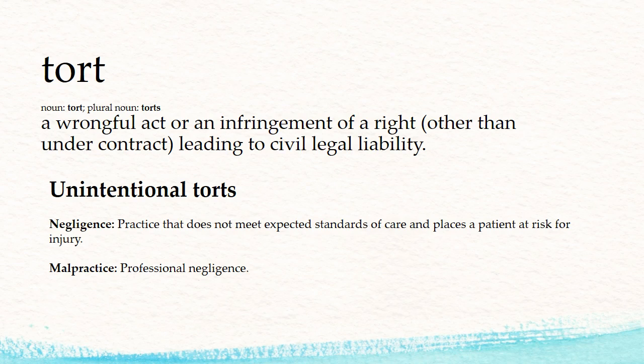Negligence is basically practice that does not meet the expected standards of care and can place a patient at risk for injury. For example, an elderly patient who is unable to move on their own should be turned every two hours — if you do not provide that care, that would be negligence. Malpractice is professional negligence. Say you have a patient with heart failure, you're giving them digoxin, you give them too much, they have an overdose and they die — that would be malpractice.